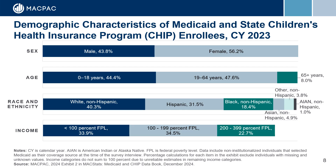Here we have the demographic characteristics of Medicaid and CHIP enrollees in calendar year 2023. We relied on survey data for these figures, which combined Medicaid and CHIP enrollees into a single category. Over half of enrollees were female, or 56.2%. Most Medicaid and CHIP enrollees were under 65 years old, with 44% between 0 and 18 years old, and 47.6% between 19 and 64 years old. The three largest racial and ethnic groups among enrollees were white non-Hispanic with 40%, Hispanic with 31.5%, and Black non-Hispanic with 18.4%. About one-third of enrollees report an income below 100% of the federal poverty level.